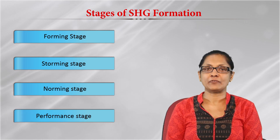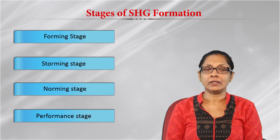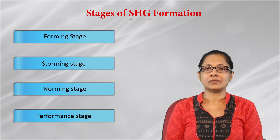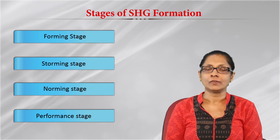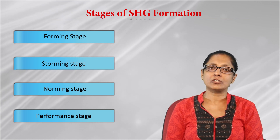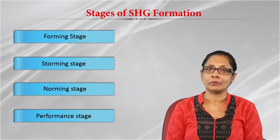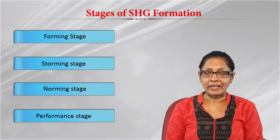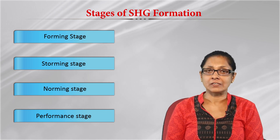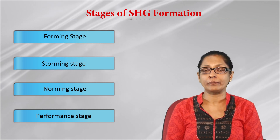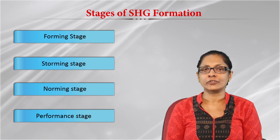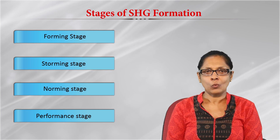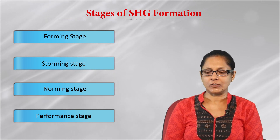The last stage is the performance stage, which is very important in assessing how the SHG is performing. Whether it is SHG or an individual's life, starting from the basic stage, you reach a level where you need to perform — to show that this group is achieving something, working for a cause, and is able to eradicate problems from the society for which it was formed. So these are the four stages of SHG formation: forming stage, storming stage, norming stage, and performance stage.